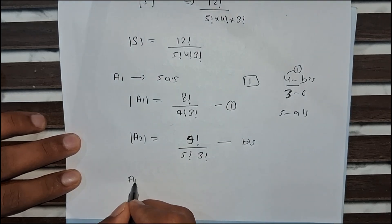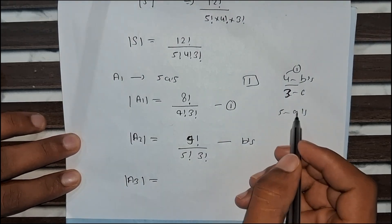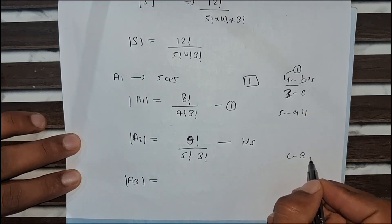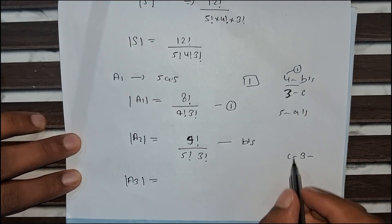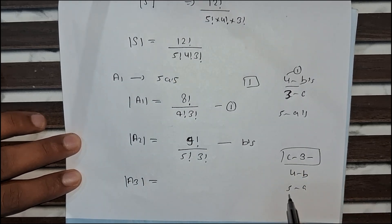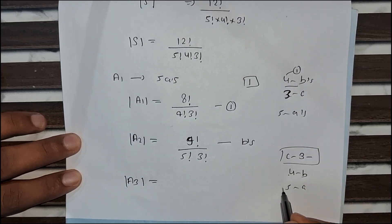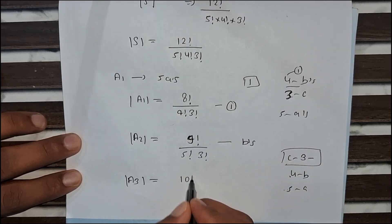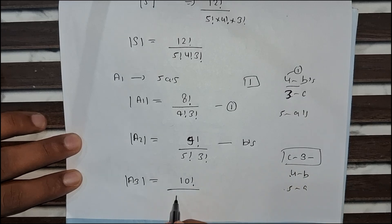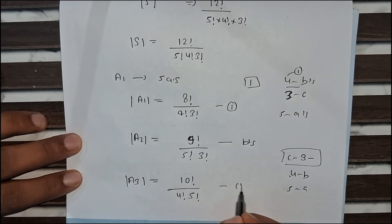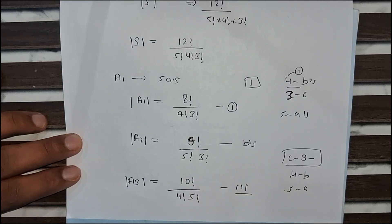Now for A3, the set of arrangements where all 3 C's are together. We consider the 3 C's as 1 block. The remaining letters are 5 A's and 4 B's, giving 5 plus 4 equals 9, plus 1 block equals 10. So A3 equals 10 factorial divided by 5 factorial times 4 factorial.